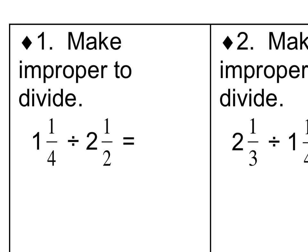Making improper to divide. So we're going to multiply the denominator times the whole number to get 4. And then we will add the numerator to get 5 fourths. And we're going to divide that by 2, the denominator, times the whole number, which is 4, plus the 1 is 5, but this is halves. So we can't just divide across. We've got two options here.